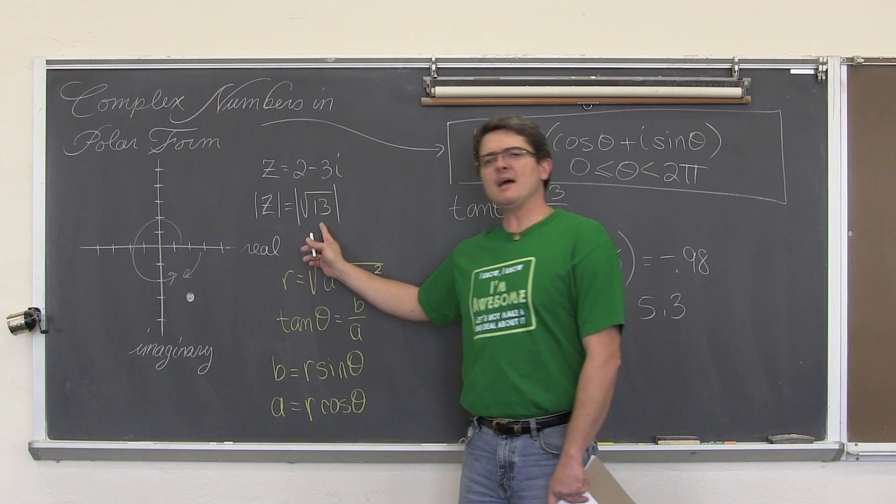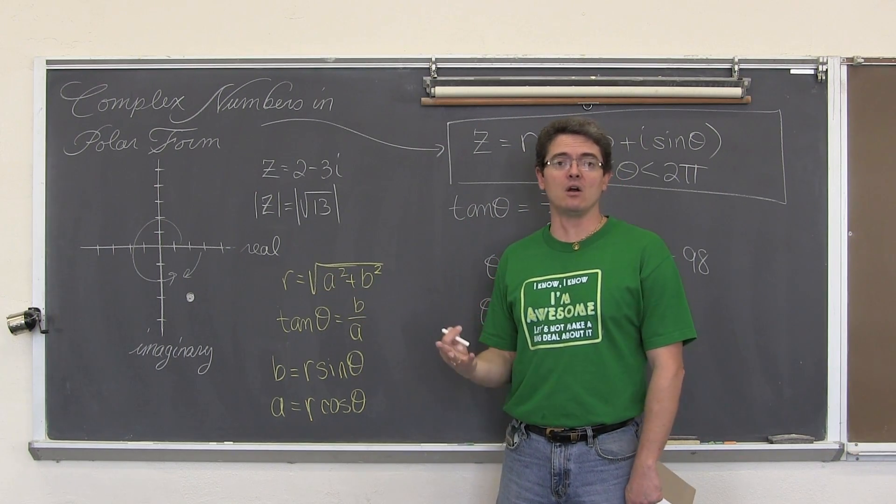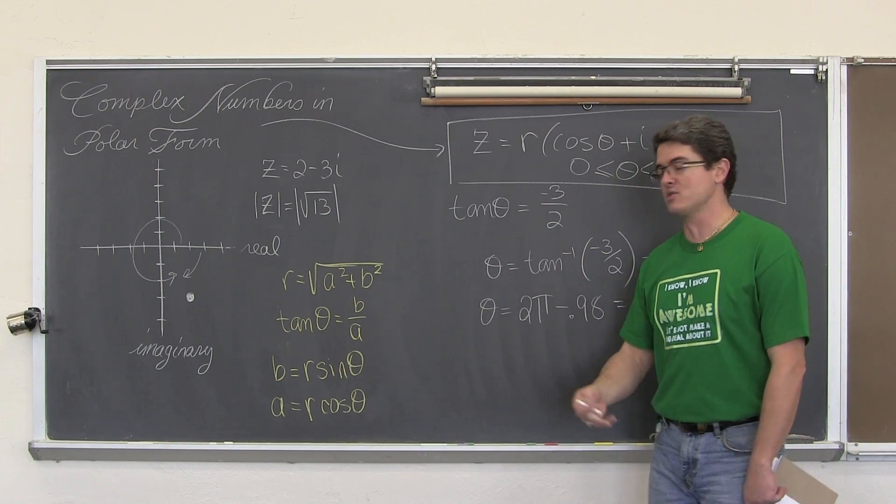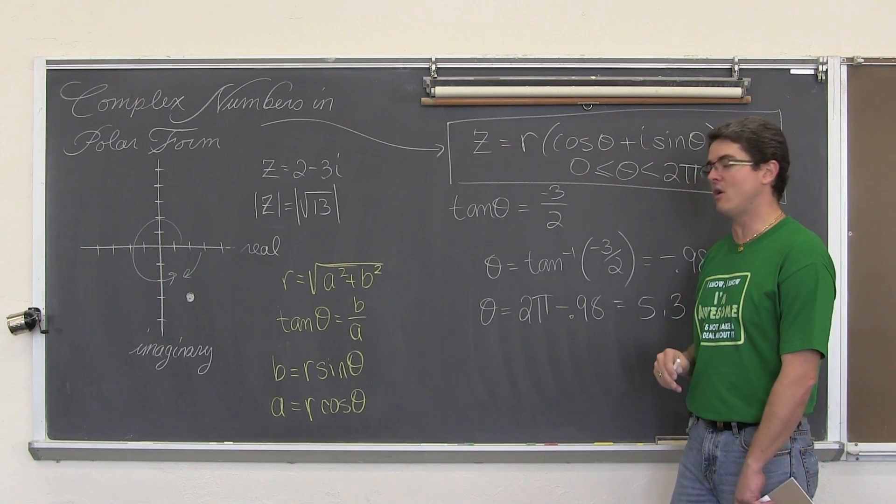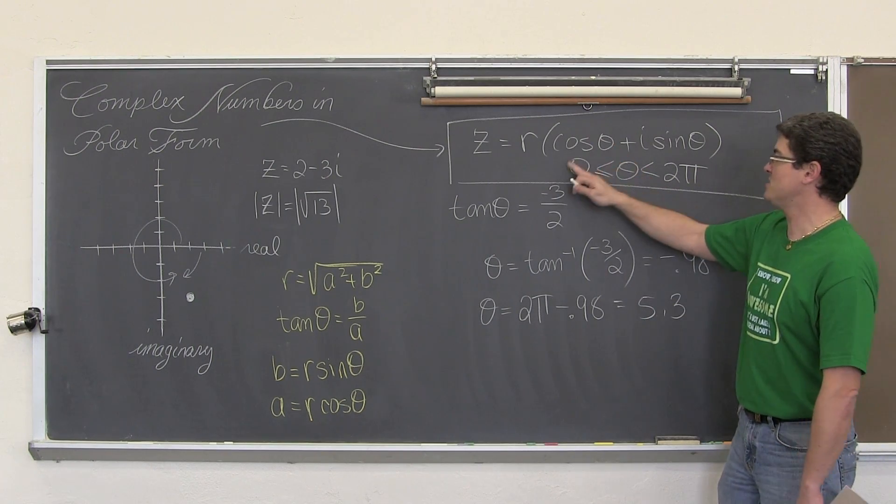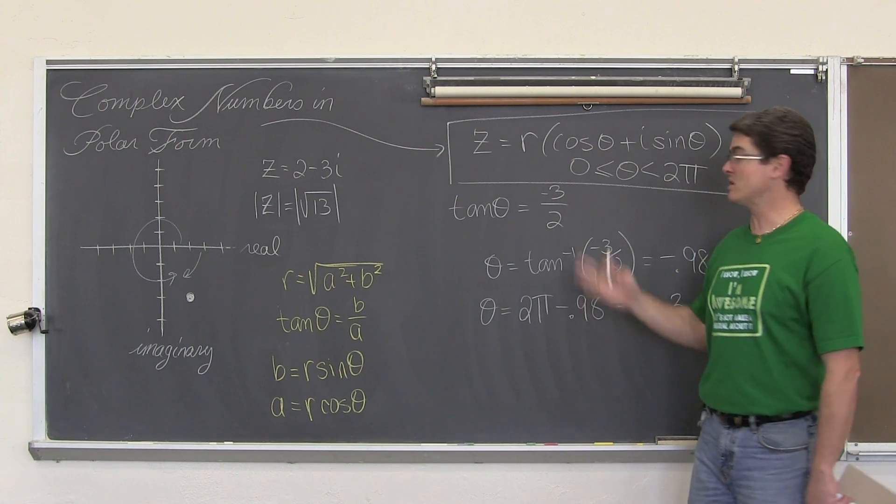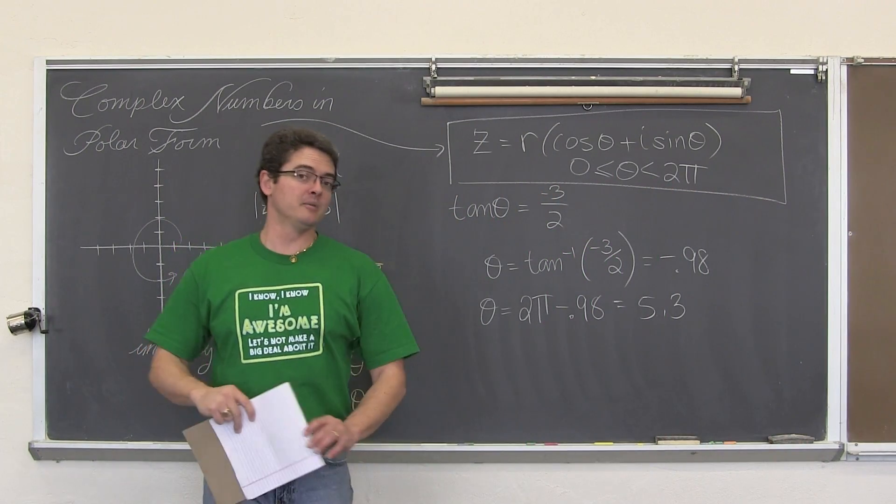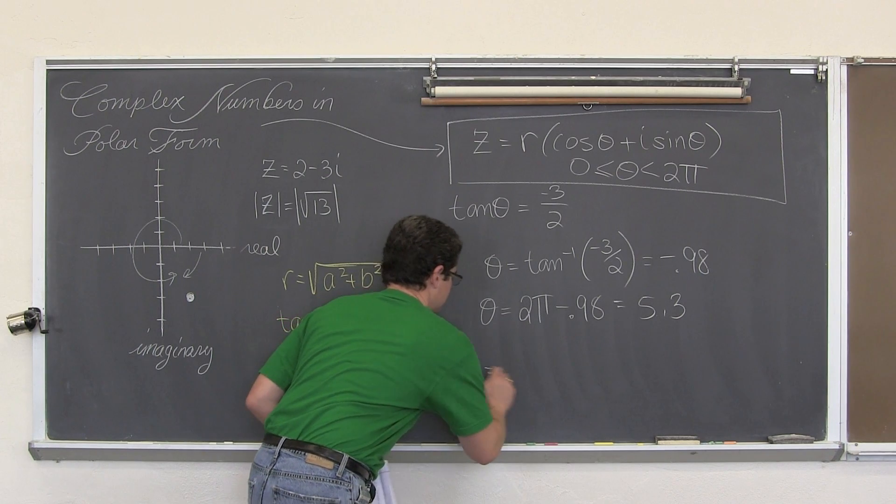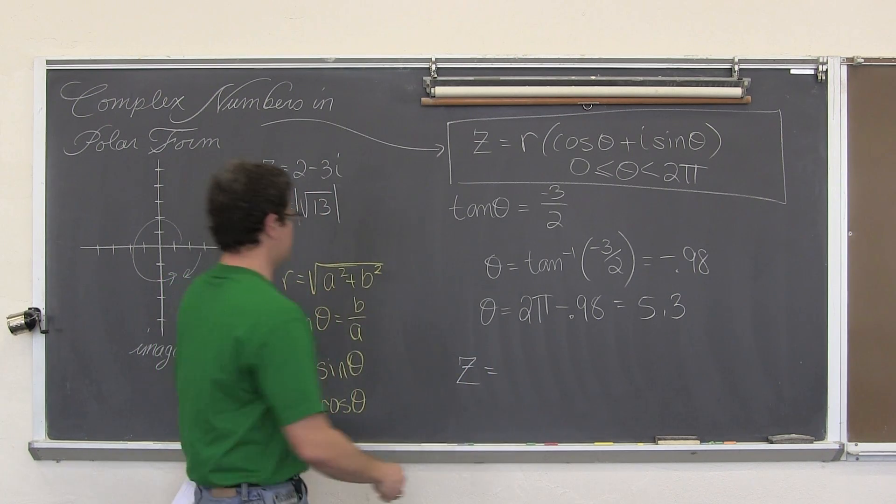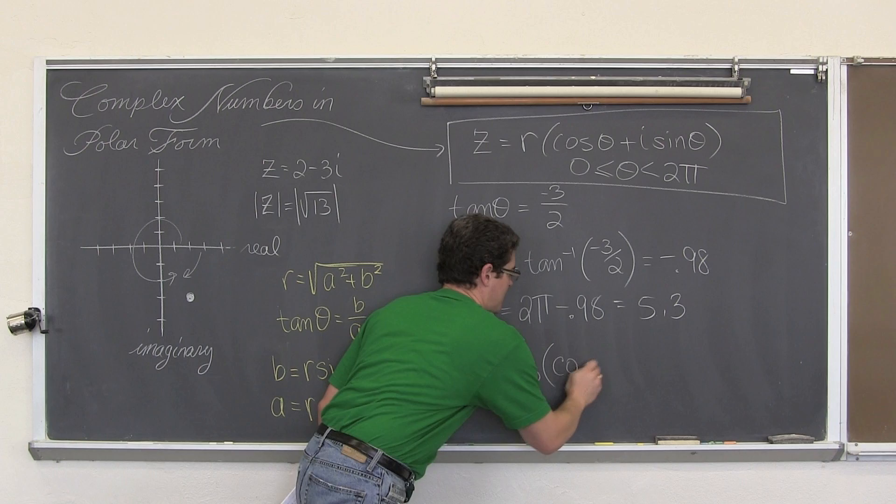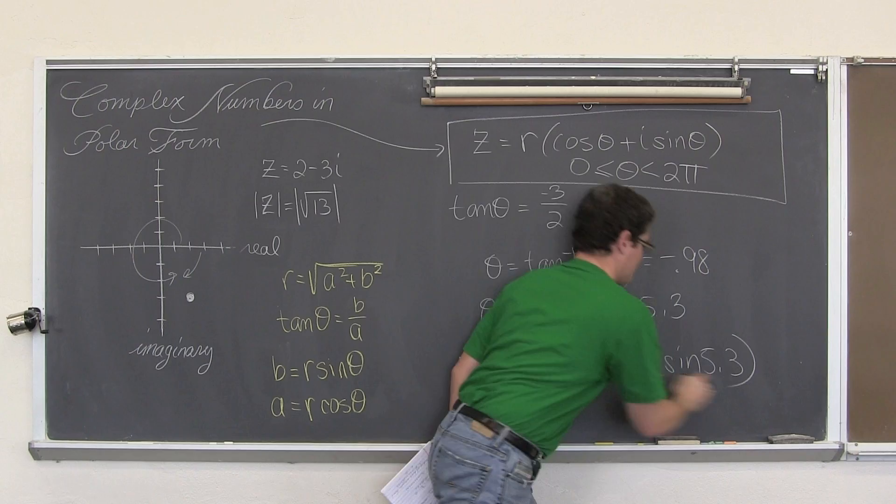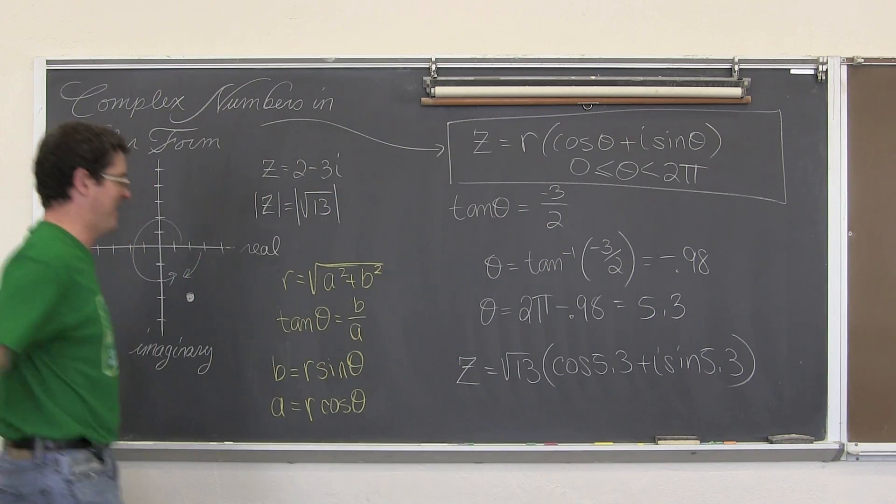So we found the absolute value of z, which was basically finding r. It was finding r as well. Absolute value of a complex number is the distance from the origin. R is the distance from the origin. So now we have r and we have theta, again defined between 0 and 2 pi. We don't want that negative rotation, at least as this is defined. So this complex number in polar form is, drum roll please, square root of 13 times the cosine of 5.3 plus i sine of 5.3. BAM!